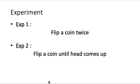So for instance, there are two examples here. The first experiment is: let's say we are going to flip a coin two times. Without performing this experiment, we do not know what would be the outcome. And similarly, we have another experiment. This time, we are going to flip a coin again and again until head comes up.